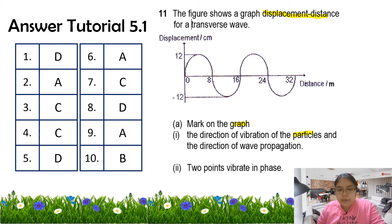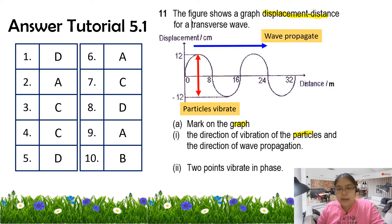Draw the arrow — this one is the particle vibration. The next one, they ask you to write the direction of wave propagation. The wave is always moving to the right-hand side, one direction only. So we just show — this one is wave propagation. Number two, you need to show two points in the same phase. We just have two phases only — either you draw about the crest, or either you draw about the trough. So from here we just show — this one is two points in the same phase.